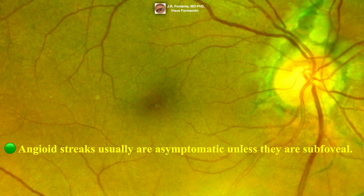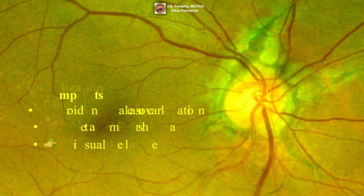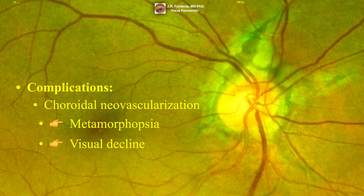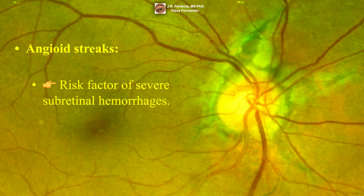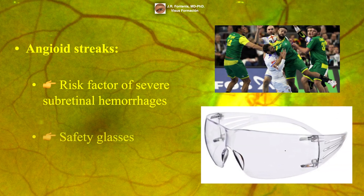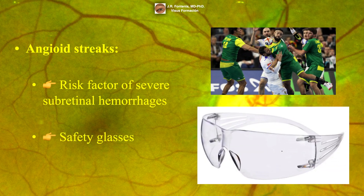Angioid streaks are usually asymptomatic unless they are subfoveal, where choroidal neovascularization can cause metamorphopsia and visual decline. They are also a risk factor for severe subretinal hemorrhages due to rupture of Bruch's membrane following relatively mild ocular injury. Safety glasses are an advisable precaution, as patients can be highly susceptible to choroidal rupture even after minor blunt injury.